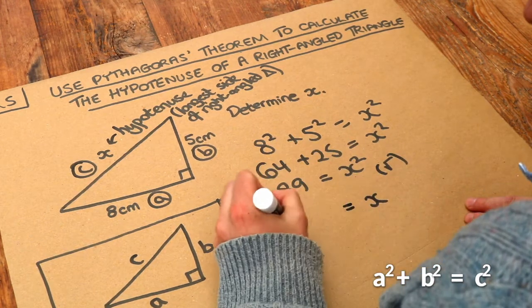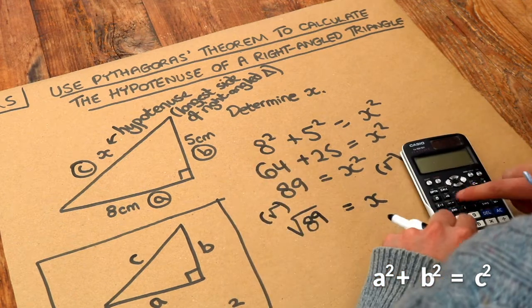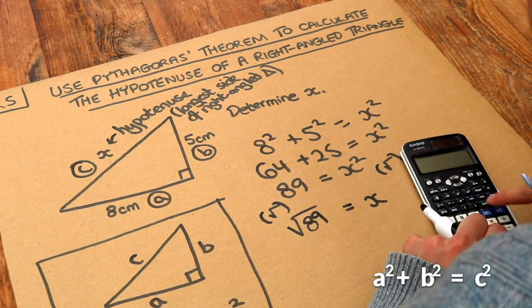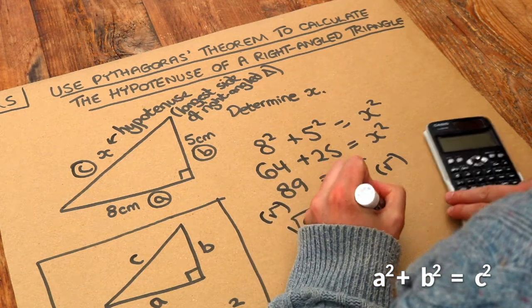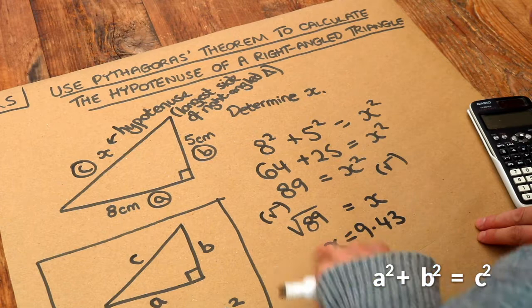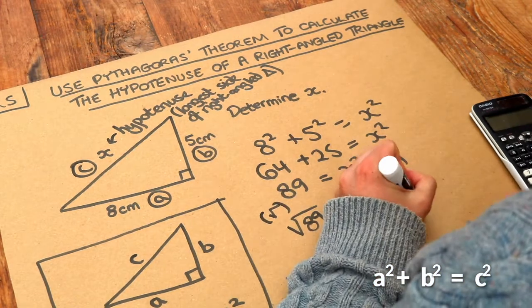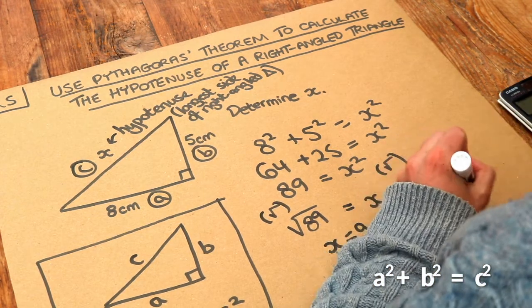The X squared just becomes X because the square root cancels out the squared. And then we square root the 89. We could just write it as root 89. But if you put it in your calculator and press the SD key to convert it to a decimal, we get 9.43 centimetres, because that was the unit, to three significant figures. And that's the final answer.